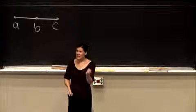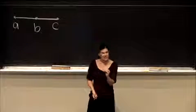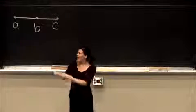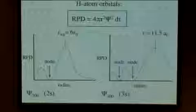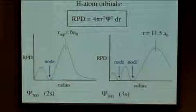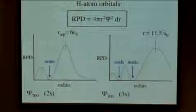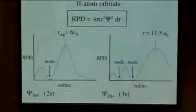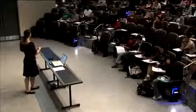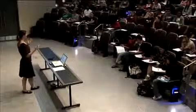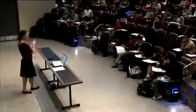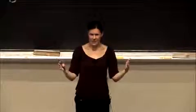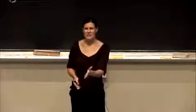So the quantum mechanical interpretation is that we can in fact have probability density here and probability density there without having any probability of having the electron in the space between. And you can think about that if you think about a standing wave, for example, where you can have amplitude at many different values of x, so an amplitude at many different distances, but you also have areas where there is a zero amplitude.